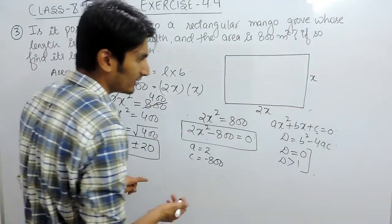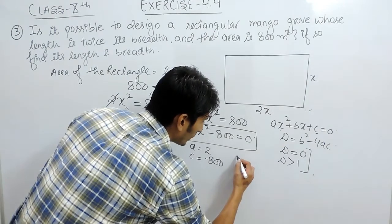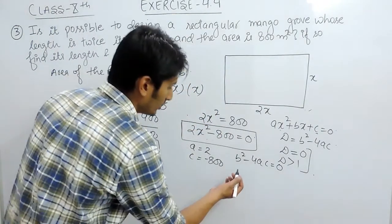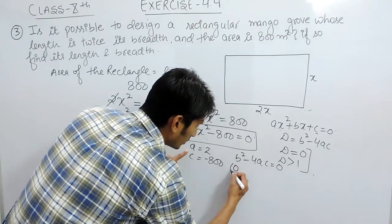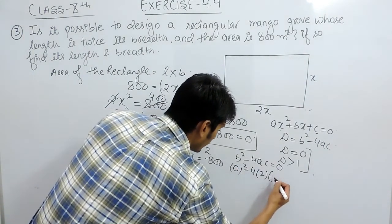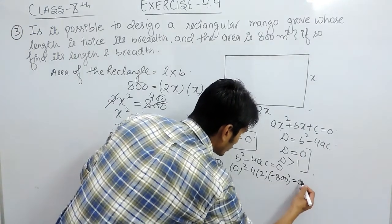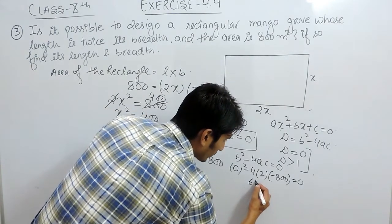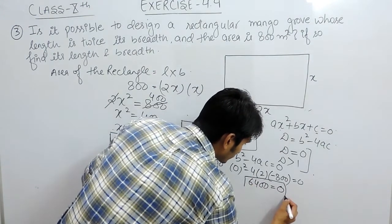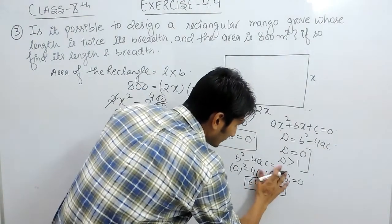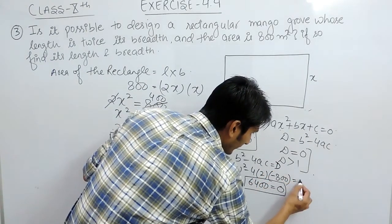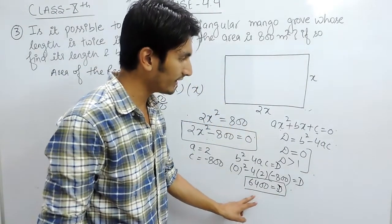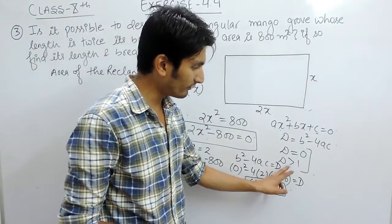Now let's find the value of D. D = b² − 4ac. Here b is 0, so 0² minus 4 times 2 times 800 — but since c is negative 800, the minus and minus give plus, so D = 4 × 2 × 800 = 6400. Clearly the value of D is 6400, which is a positive number, meaning D is greater than 0, so the roots are real.